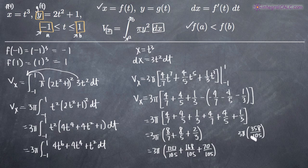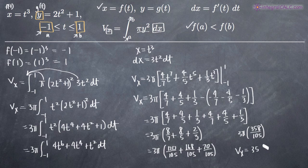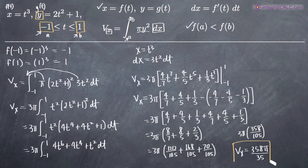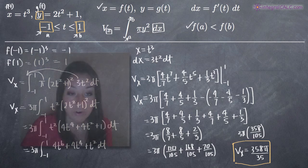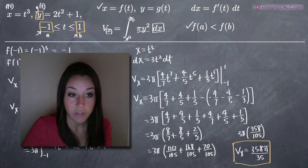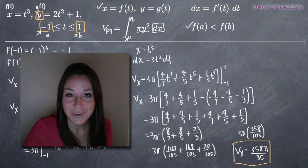We can cancel 105 with the 3 out front, leaving 35 in the denominator. So our volume of revolution around the x-axis is 358 pi over 35. That is the volume obtained by revolving this parametric curve around the x-axis on the range negative 1 to 1. I hope this video helped you guys and I will see you in the next one.